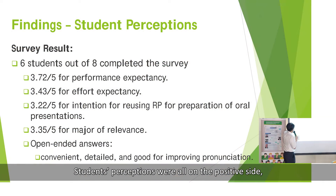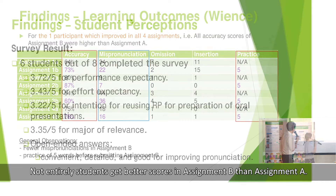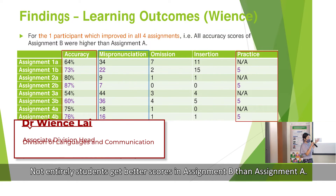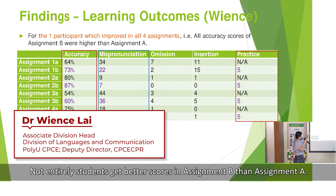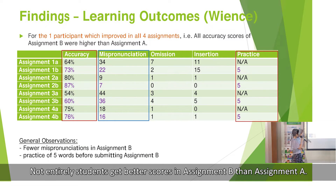The session results are on the positive side, very similar to the quality of signing by the third column. It's not entirely evident that students generally get better scores in signing B than in signing A.